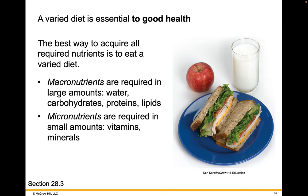A varied diet is also essential to good health. The best way to acquire all the required nutrients is to eat a varied diet. Macronutrients are required in large amounts — things like water, carbohydrates, proteins, and lipids. Micronutrients are things that are required in small amounts, like vitamins and minerals.